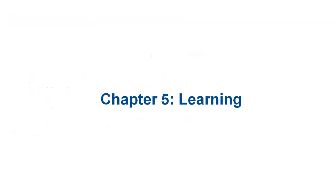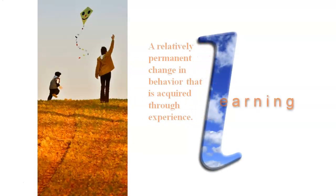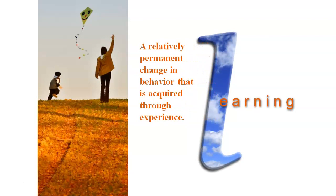Moving on, we go into Chapter 5, which was all about learning — how we learn, how our brain works when we're learning, and different ways that we can learn. Like the beginning of many chapters, it's important to know what we mean when we say learning. For this class, learning is a relatively permanent change in behavior that is acquired through experience. You have some sort of experience and from that, you've changed your behavior.